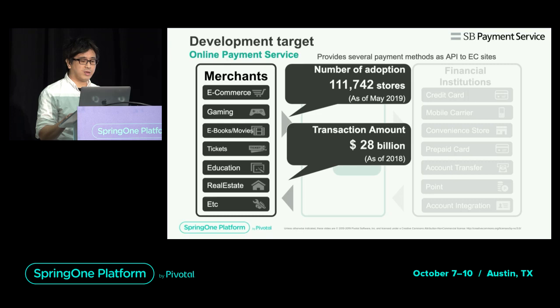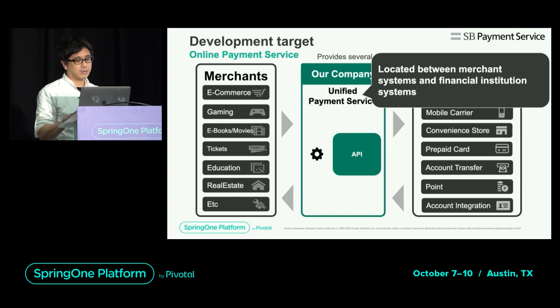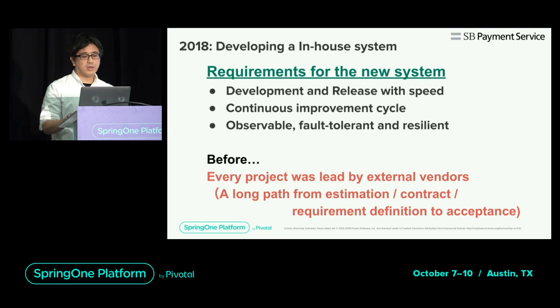The system supports more than 40 payment methods including credit card, prepaid card, and account integration. This system is an intermediary service located between the Merchant and the financial institution systems. The main requirements for the payment system were speedy development release, continuous improvement cycle, and easy-to-monitor and fault-tolerant resilience.